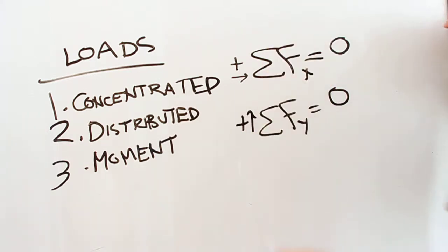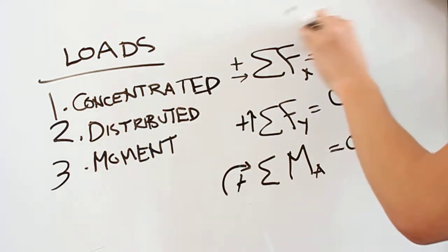You want the total moment about a certain point to be zero, and you're going to once again indicate the direction. So these are really the three equations that we use to solve most static load problems.